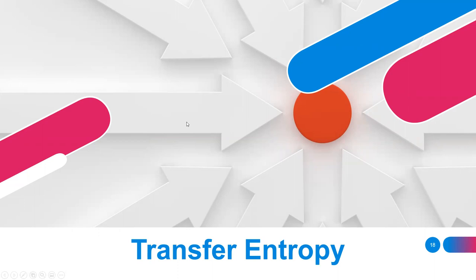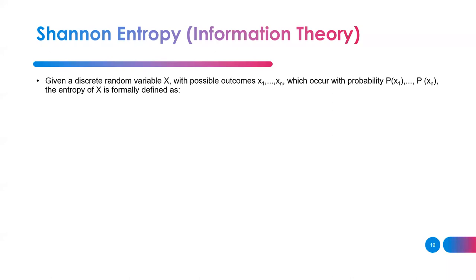Now let's move on to transfer entropy. As you saw, Granger causality is straightforward: you fit an autoregressive model for the future of X using its past, then add another variable's past and check if the results differ significantly. Instead of using statistics and prediction power, transfer entropy uses information theory and the concept of entropy. So we need to refer back to Shannon entropy.